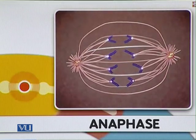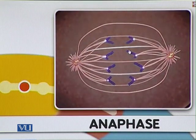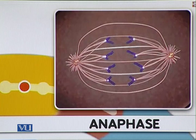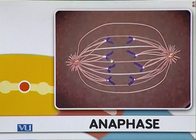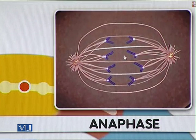In anaphase, the microtubules which were held together at the centromere region through a special molecule — cohesin — are released. The cohesin present at the centromere or kinetochore region is degraded, which allows the daughter chromatids, now chromosomes themselves, to separate. The forces generated by the microtubules drive this separation in two ways.